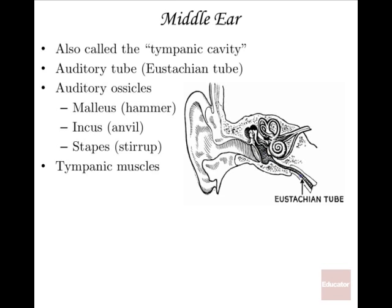The auditory tube is a hollow passageway connecting the middle ear to the nasopharynx — the top of the throat. The pharynx is the throat, and the top of the throat is right next to the nasal cavity. This tube is also called the Eustachian tube. Any time you get that change in pressure inside your head — like going up in an airplane or changing elevation in a car — and you feel a buildup of pressure, you can thank the Eustachian tube for equalizing it.